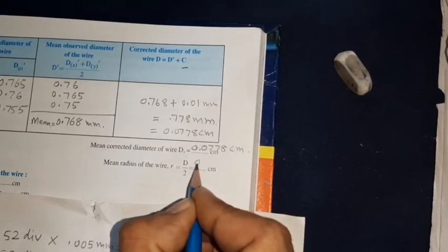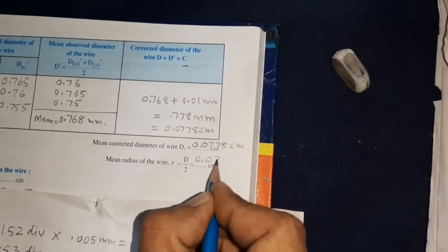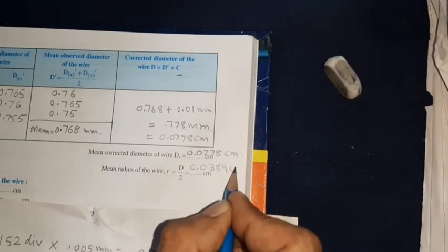Now our radius of the wire is 0.0389 centimeters.